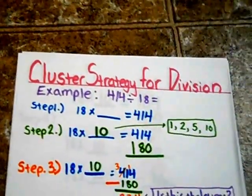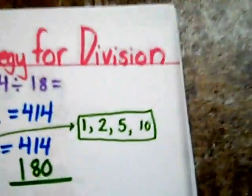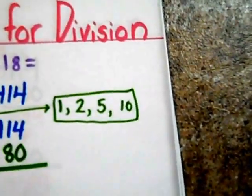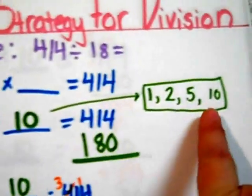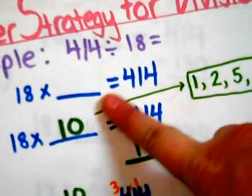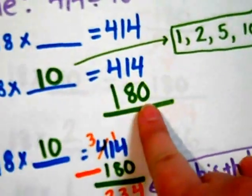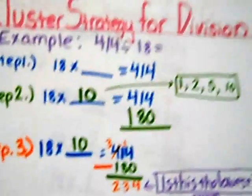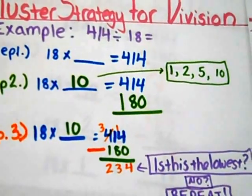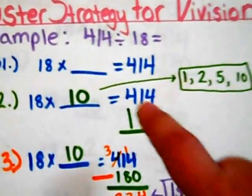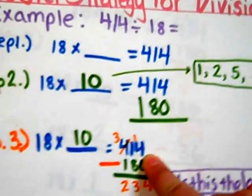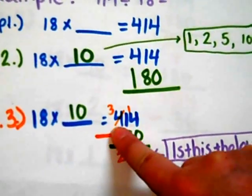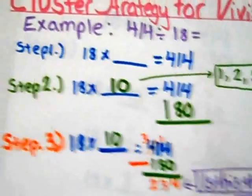Step number two is to choose one of the landmark numbers of either one, two, five, or ten. I know that 414 is a large number, so I use the largest factor. 18 times 10 is 180. Step number three is to subtract the product from the original dividend. 180 from 414 using regrouping gives me 234.